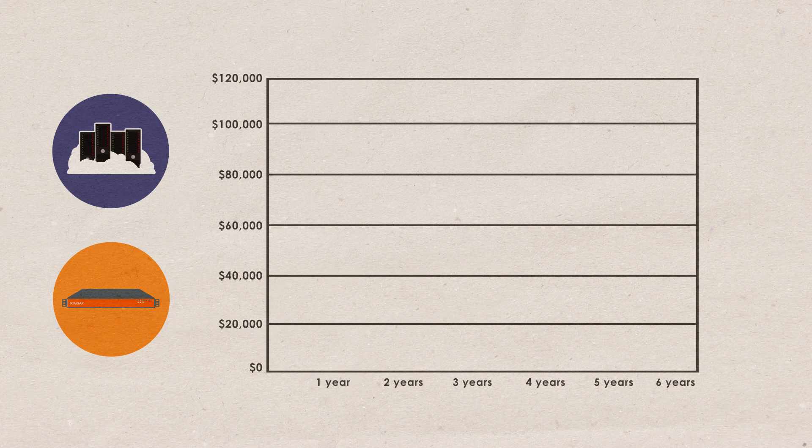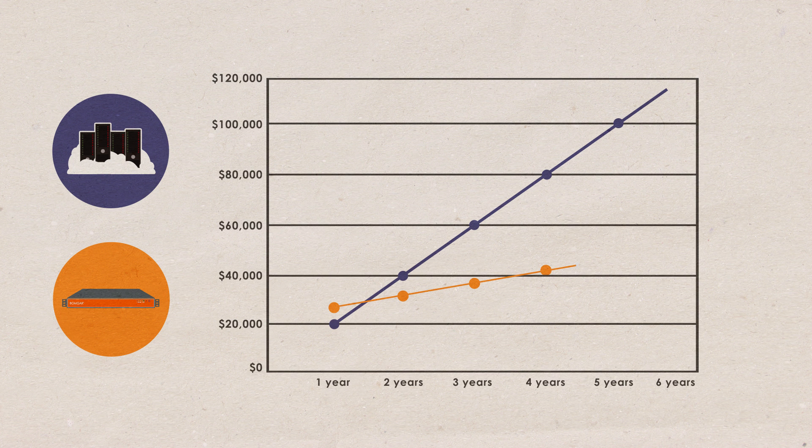With software-as-a-service, you pay the same amount every year. That's really just rent. But BOMGAR is something you own, and you can get upgrades and support at a fraction of the cost compared to SaaS alternatives.